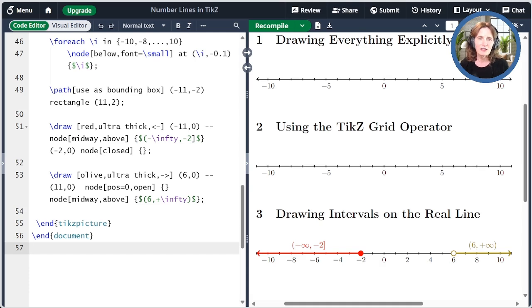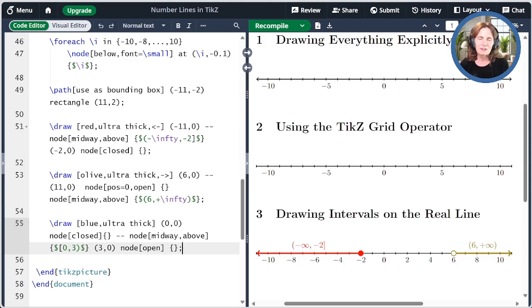Finally, let's draw an interval that is half closed and half open from 0 to 3 in blue. I place the nodes a little differently here just to demonstrate the flexibility in this regard. I put the first node that's closed right at 0, 0, immediately following that declaration. I didn't have to say the position because it knows the position is right there.